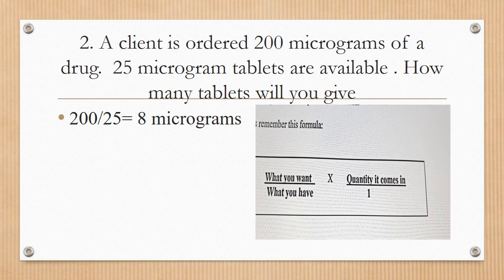Next question: a client has been ordered 200 micrograms of a drug, available in 25 micrograms per tablet. How many tablets will you give? Using what you want divided by what you have: 200 divided by 25 equals 8 tablets.